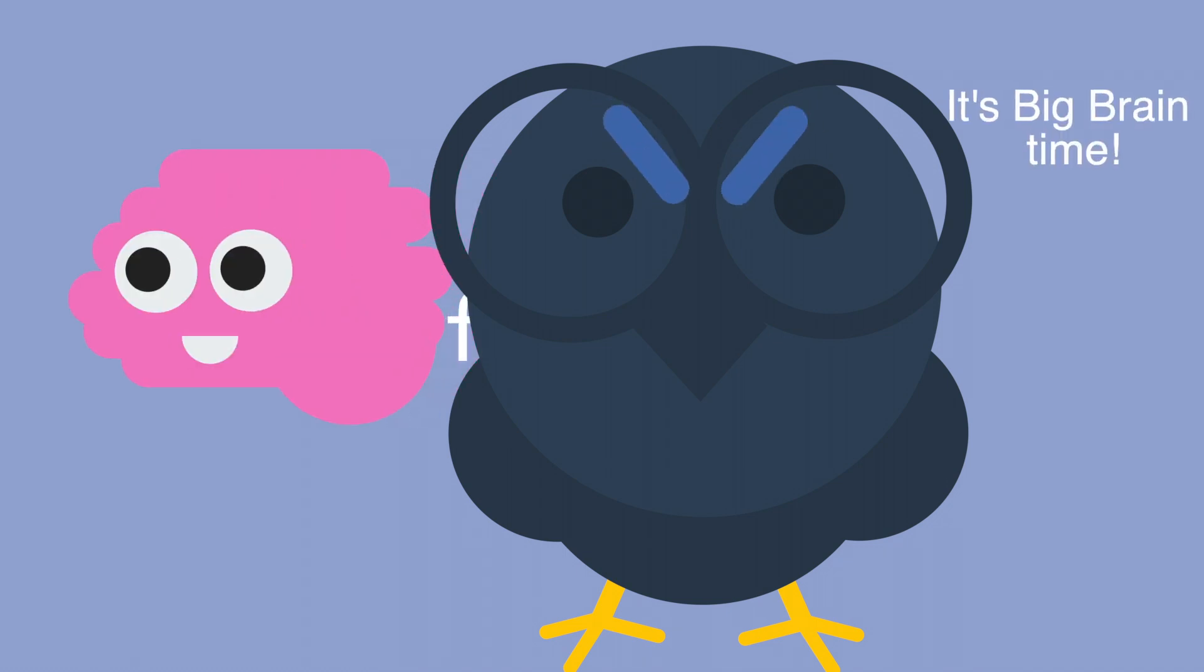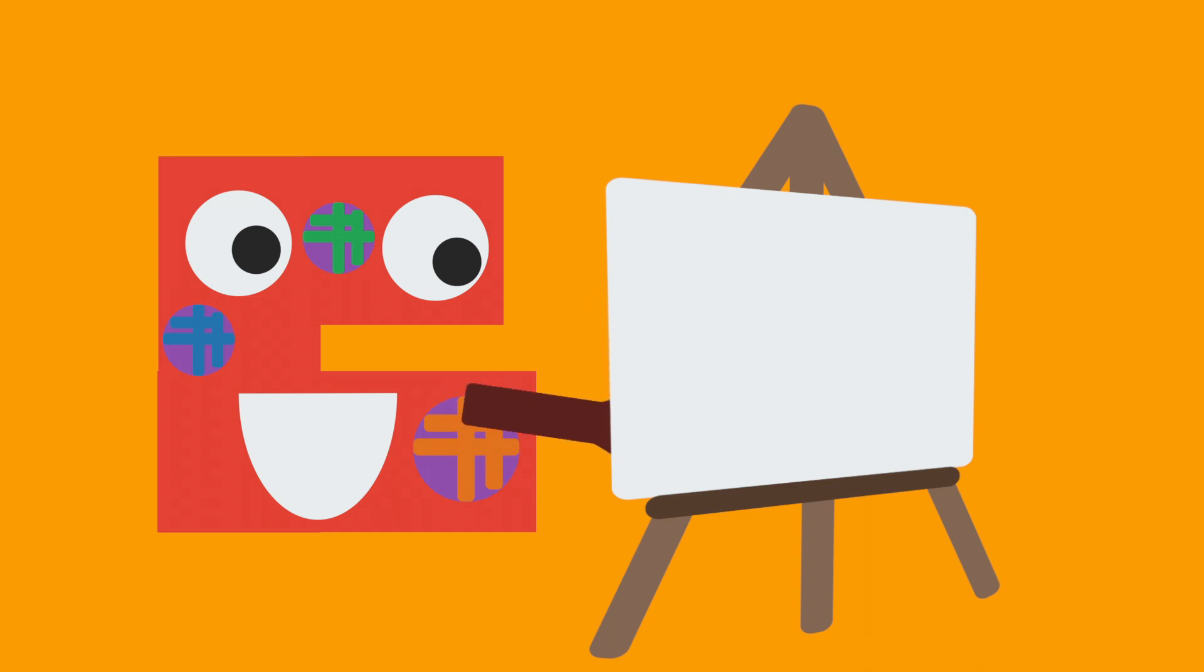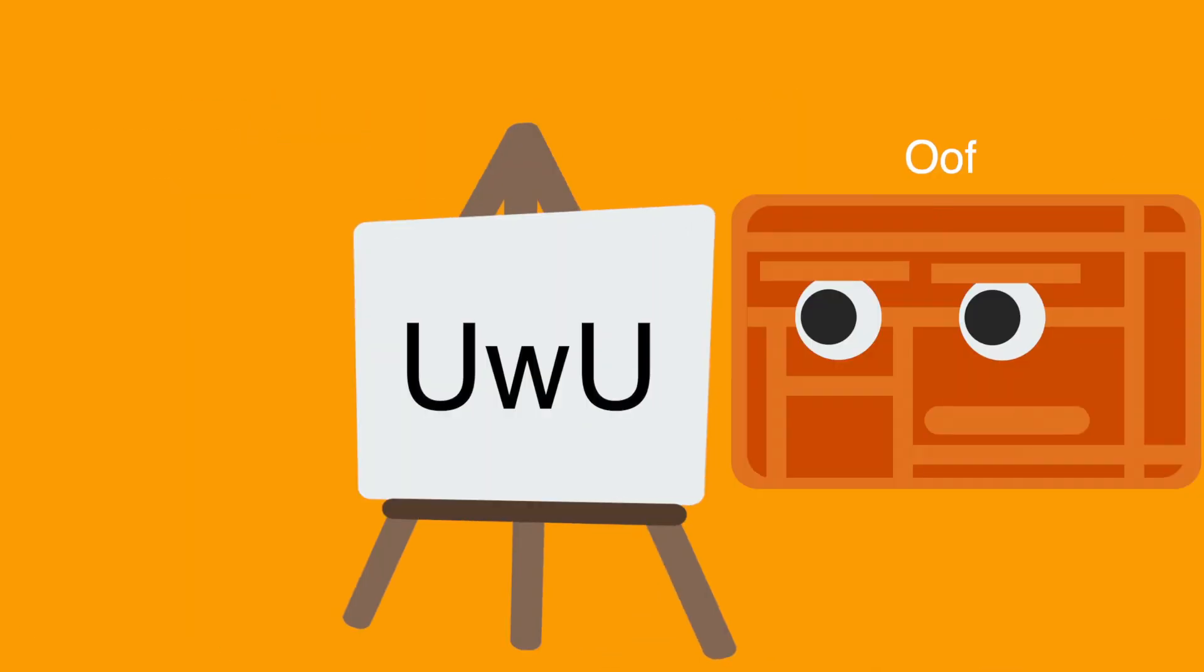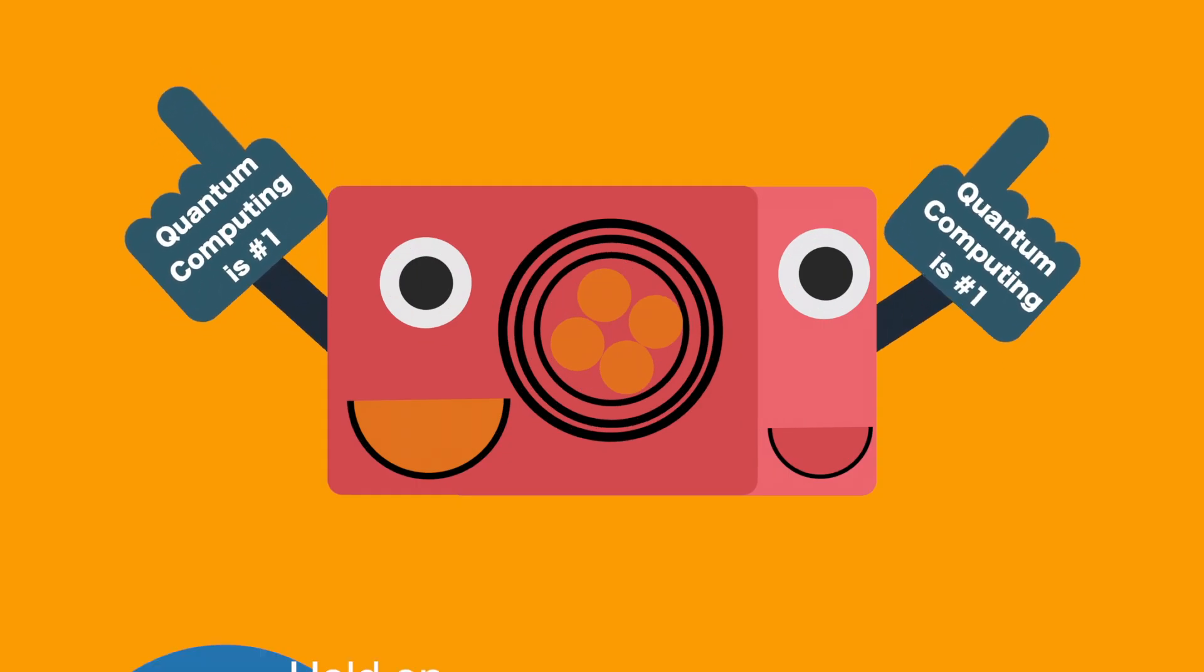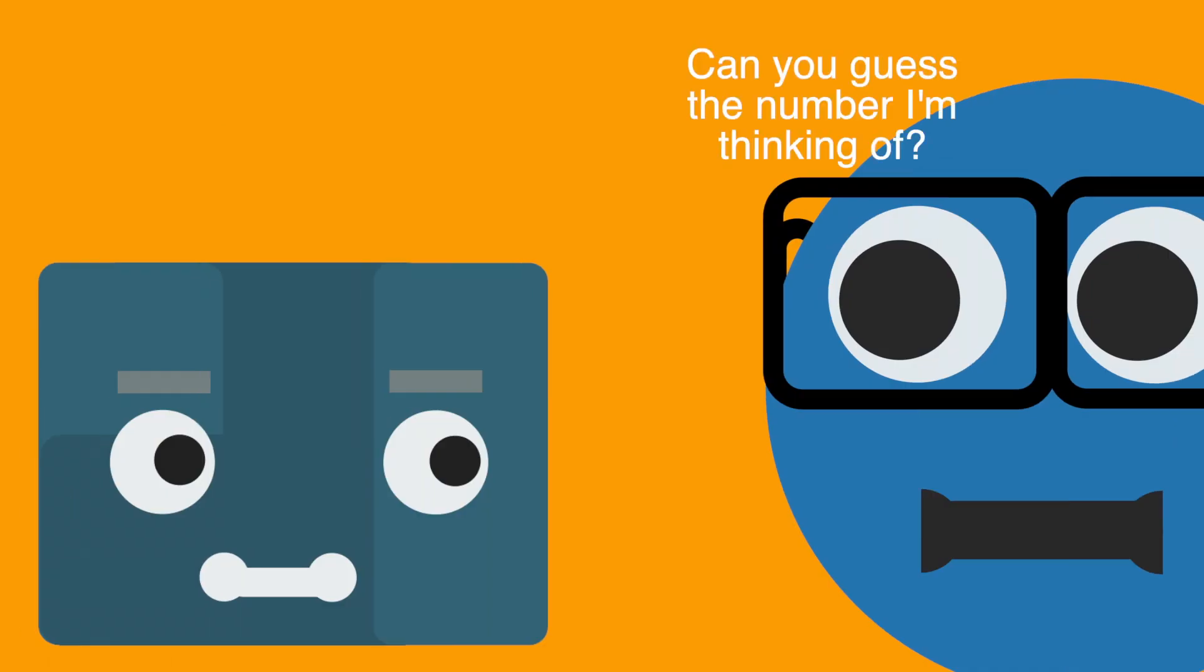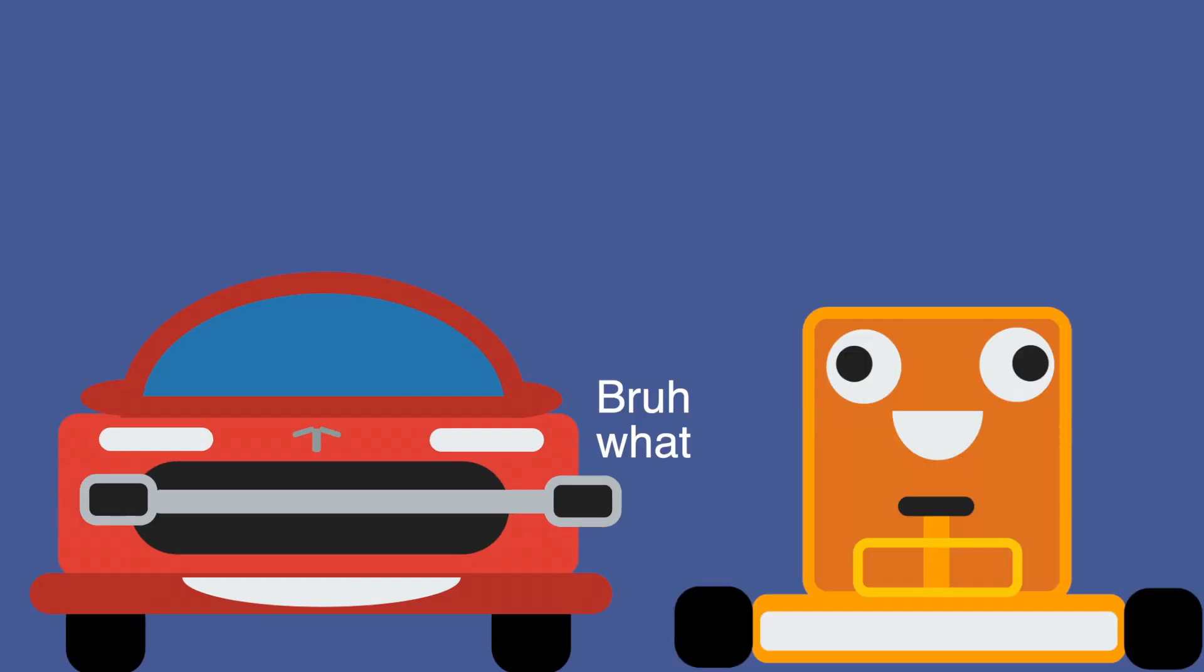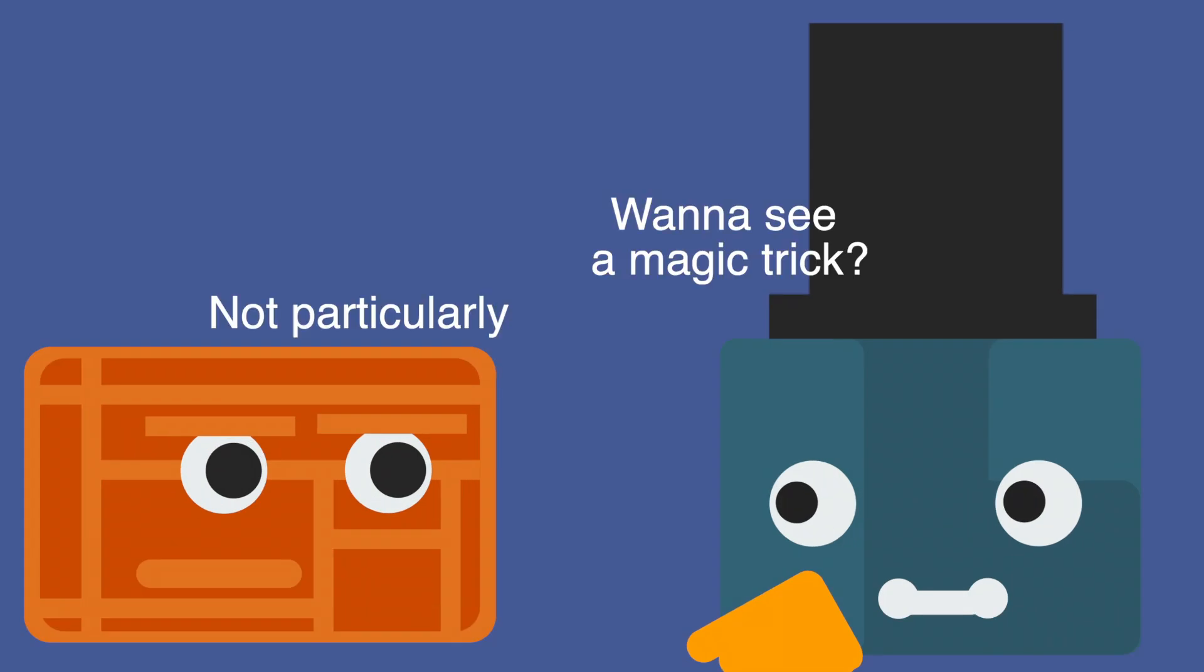Basically, we need to demonstrate that a quantum algorithm can solve a problem using a fewer number of guesses than a classical algorithm. Such a problem is not one of the grandiose scientific breakthroughs we mentioned earlier. It would be as simple and impractical as guess a number between 1 and 100. It's essentially the equivalent of Elon Musk unveiling the next Tesla model to be a go-kart. The computation used to prove quantum supremacy would be a cheap parlor trick.